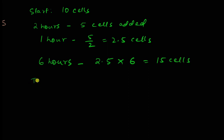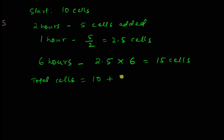Now if I ask what is the total number of cells, we started with 10 cells. So we take that and add what we calculated: 2.5 times six, which is 15 plus 10, giving us 25 cells in the end.